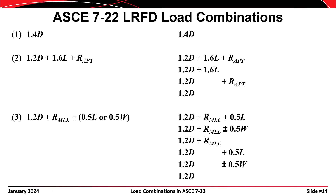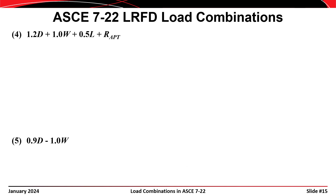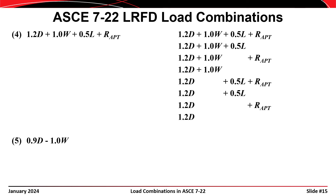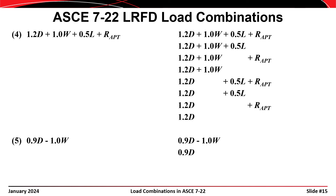Applying the same idea to load combination number three — which includes live load, wind load, and roof load in addition to dead load — gives another set of permutations. Applying it to load combination number four results in eight permutations, and applying it to load combination number five results in two permutations.